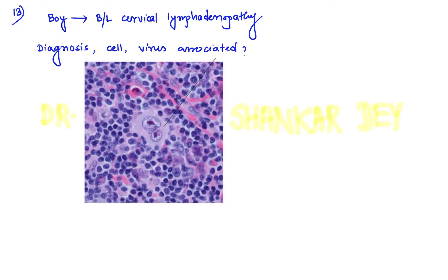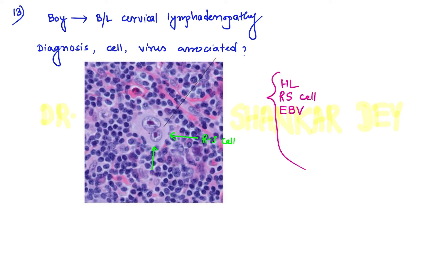Question number 13 was a clinical question. A boy presented with bilateral cervical lymphadenopathy, and on biopsy of the lymph node, an image was shown. The question asked for the diagnosis, the cell that is marked, and which virus is associated. As you can see, this is the RS cell — Reed-Sternberg cell. The diagnosis is Hodgkin lymphoma. The cell marked is the RS cell or Reed-Sternberg cell. The virus associated is Epstein-Barr virus (EBV).